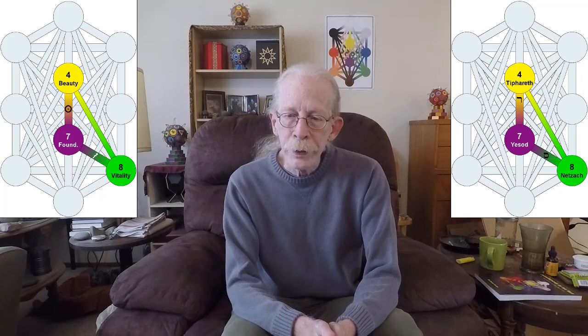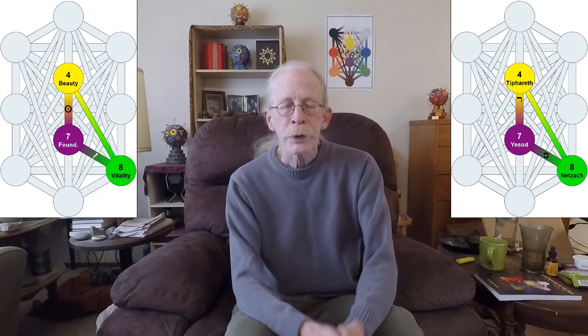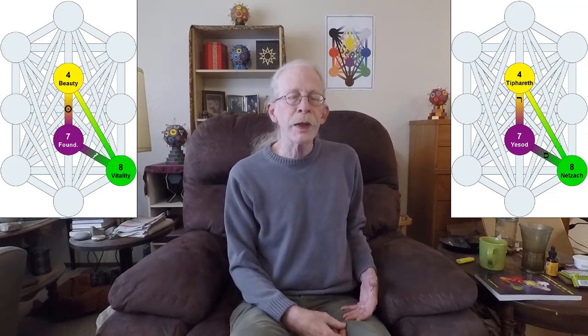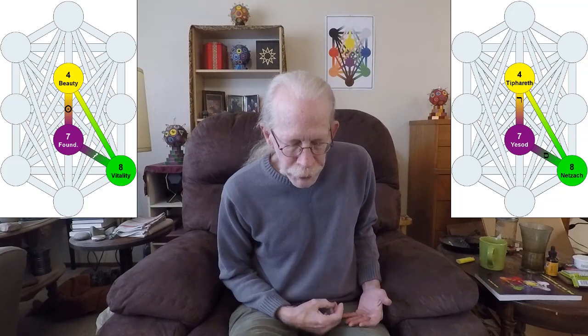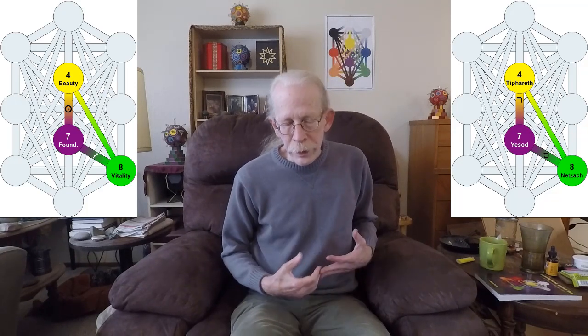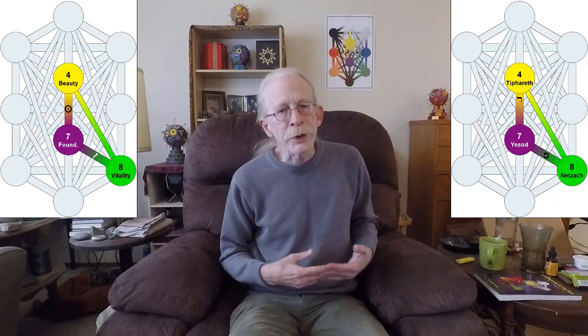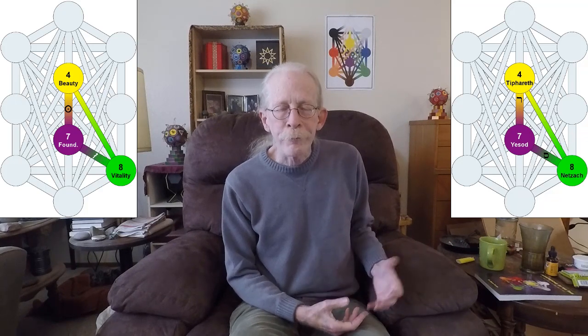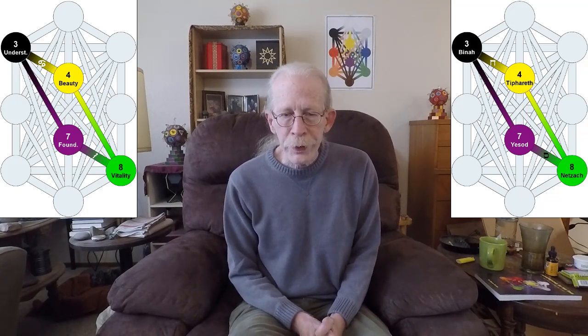The first gate today is a triangle. It starts in Yesod, goes down the path of Samek into Metzach, comes straight up the hidden path to Tiferet, and then down the path of Resh to Metzach, and then back around. The important thing about this gate is that passage along Resh down to Metzach — that integrates Resh in the dynamic of Samek.